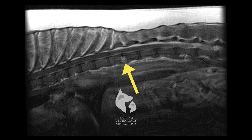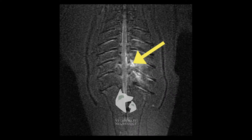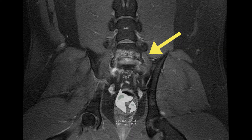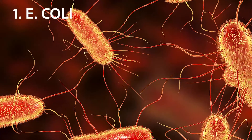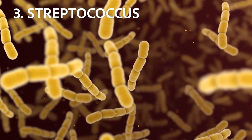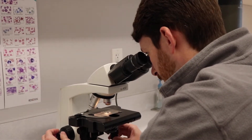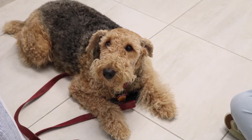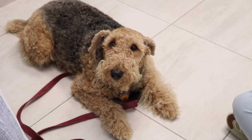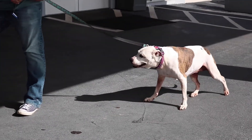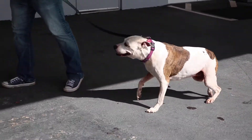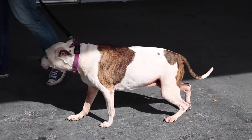Discospondylitis occurs when there is an infection at the end plates of the backbones or vertebral bodies, which sit right next to the disc space. The causes are often bacterial in nature — things like E. coli, staphylococcus, and streptococcus are the most common bacteria we can culture. These bacteria can also be found in the bloodstream or urine of the patient. We don't exactly know why the infection gets into the end plates, but hematogenous, or blood-borne, spread is the most likely cause.